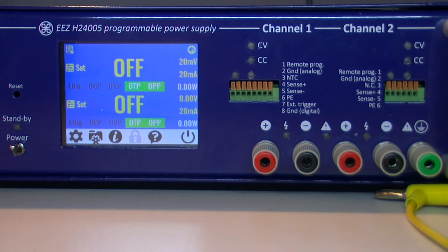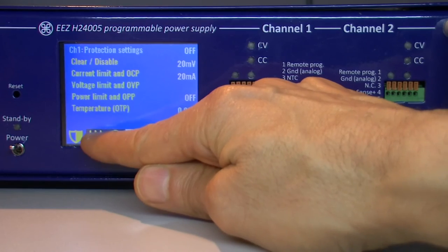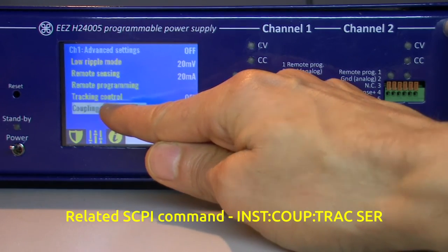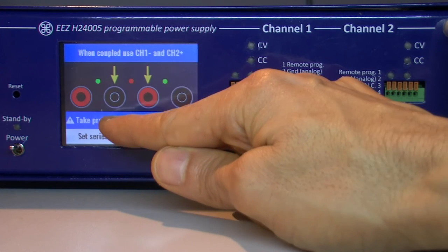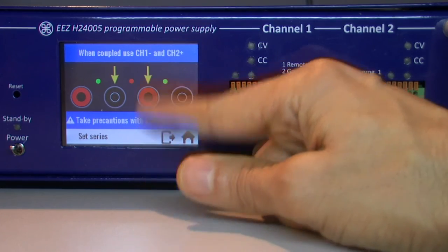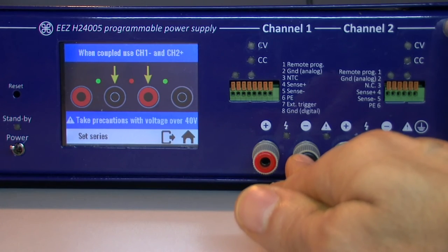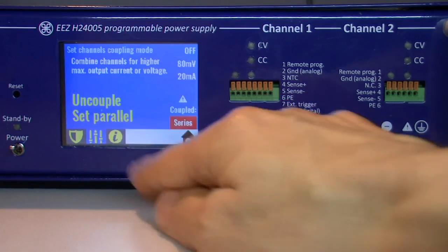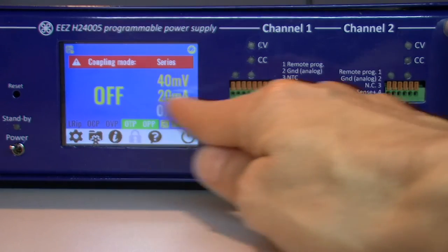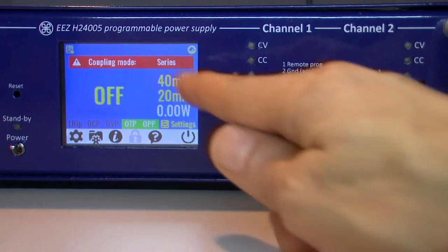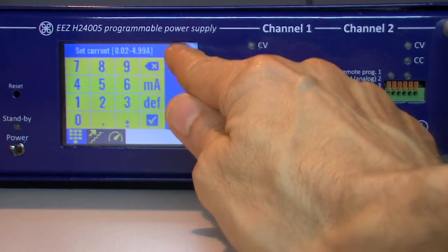Channel coupling option could be found on both channels like this - advanced settings, and coupling settings. We can choose type of coupling. Let's continue with series. There is additional info screen that two output terminals will be used, and here we go. And now we have one display for both channels with bigger numbers, and we can put some output values.